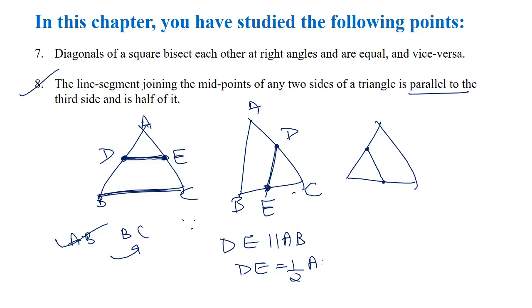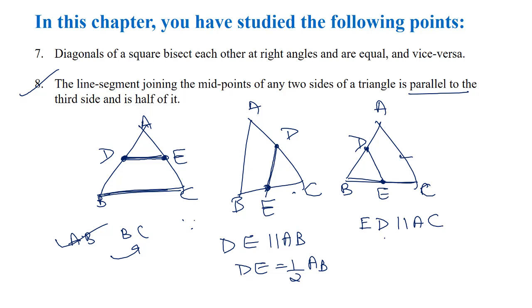In another example with triangle ABC, if we join the midpoints of BC and AB, the line segment formed is parallel to AC and equals half of AC. So we have studied the midpoint theorem.